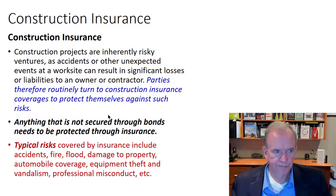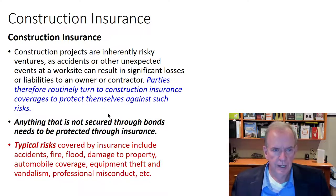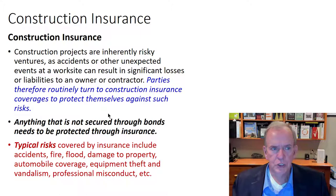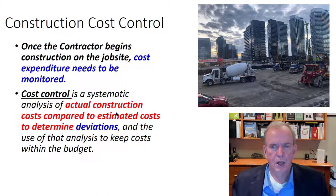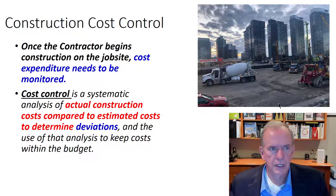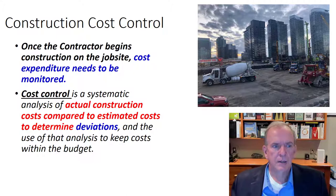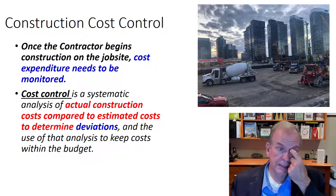Bonds don't guarantee a trouble-free job, but they do assign risk away from the owner — there's a cost to it but that's the function. Construction insurance covers us for all the other things that can happen on site: liability insurance, omissions insurance for designs, and protection against accidents, fire, flood, damage to property, and lawsuits. Lots of things can happen on projects when you've got heavy equipment and lots of things in motion, so we definitely have to have all kinds of construction insurance.